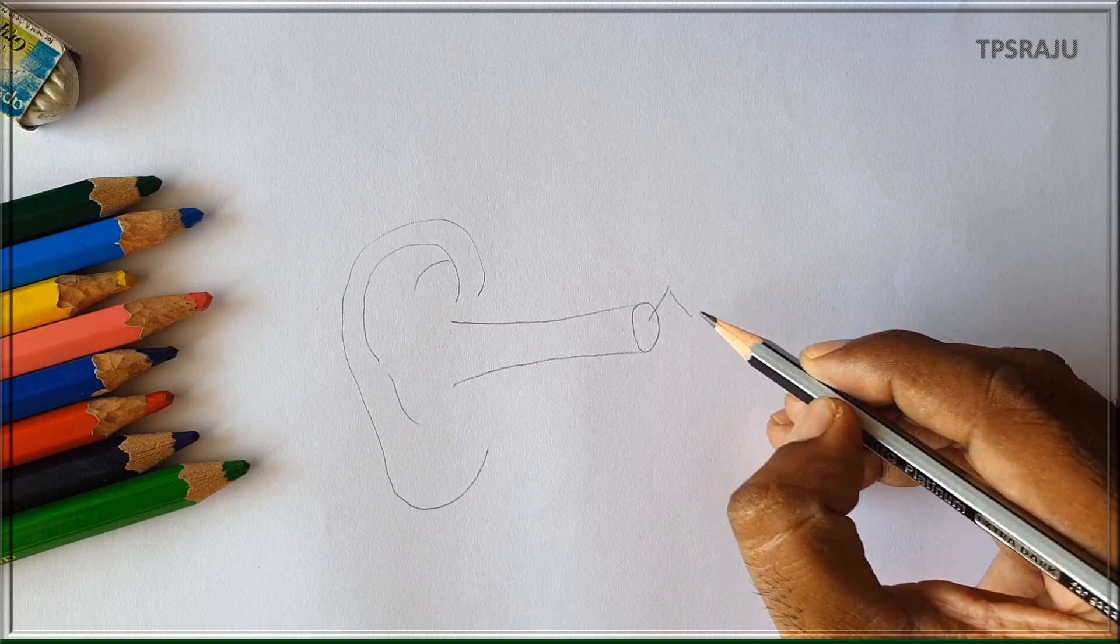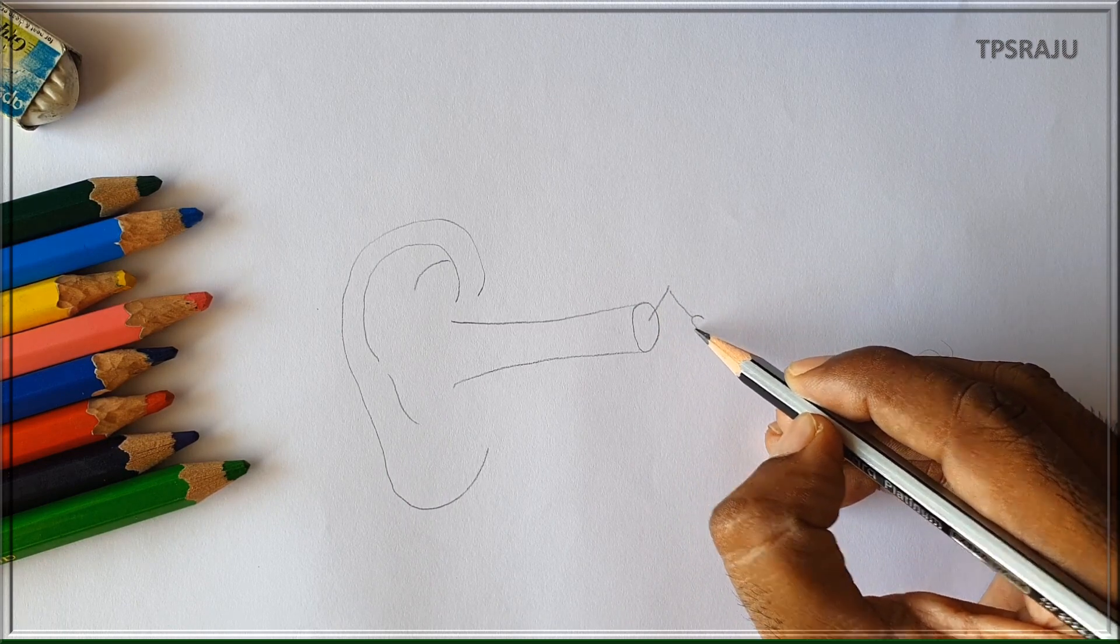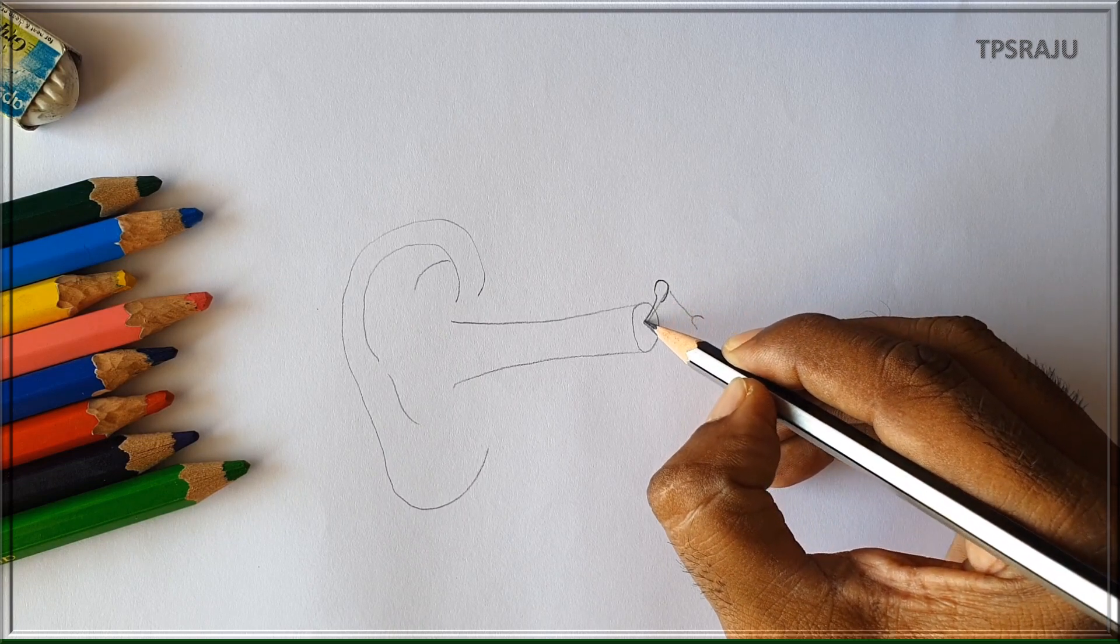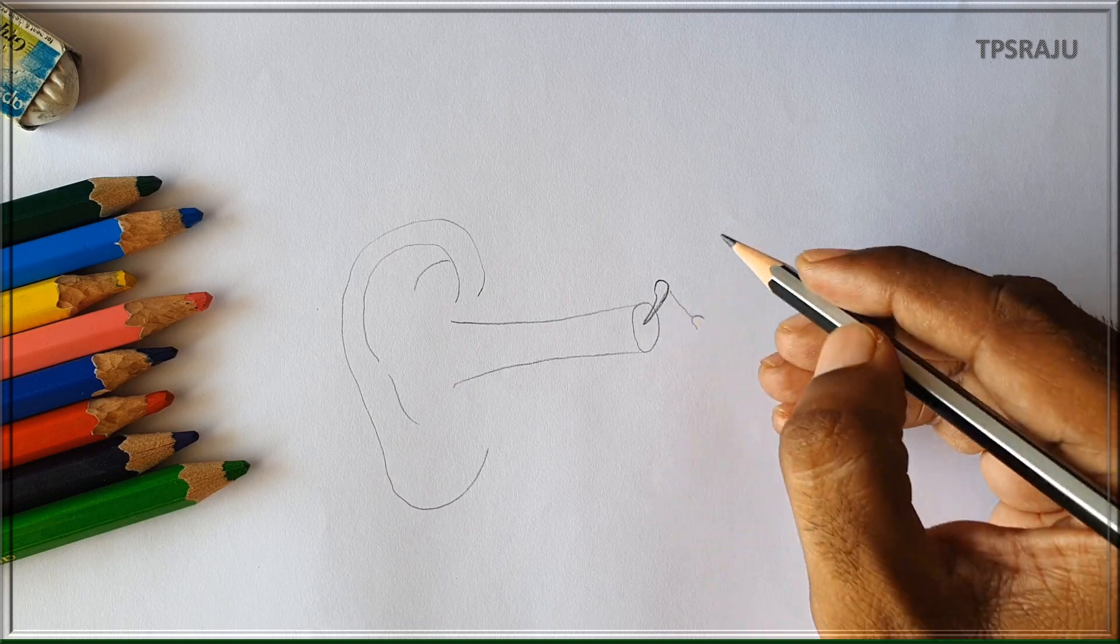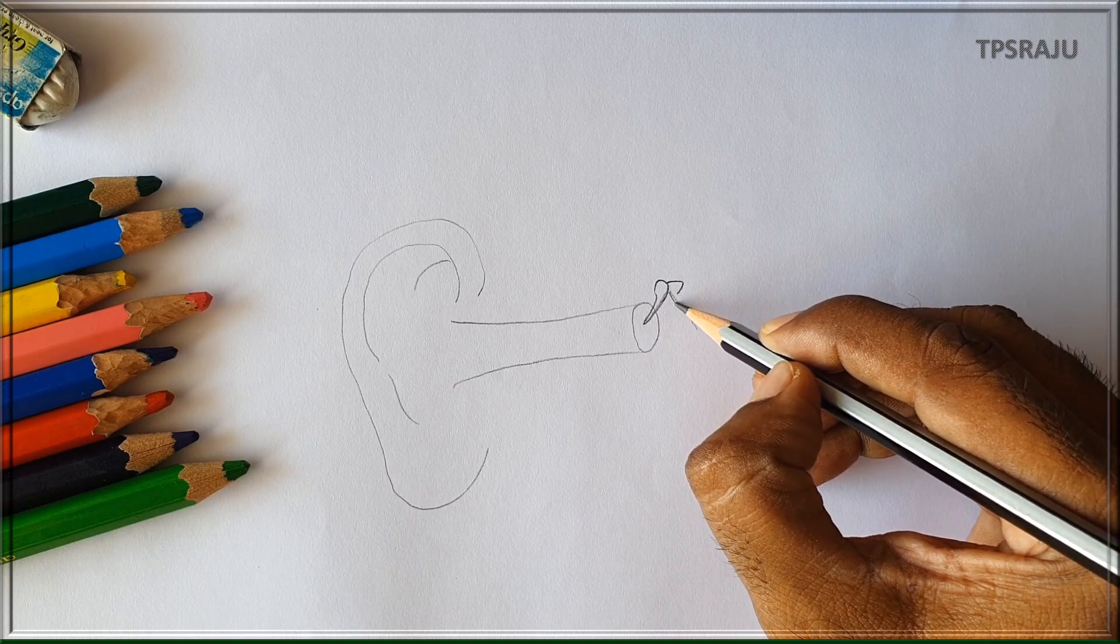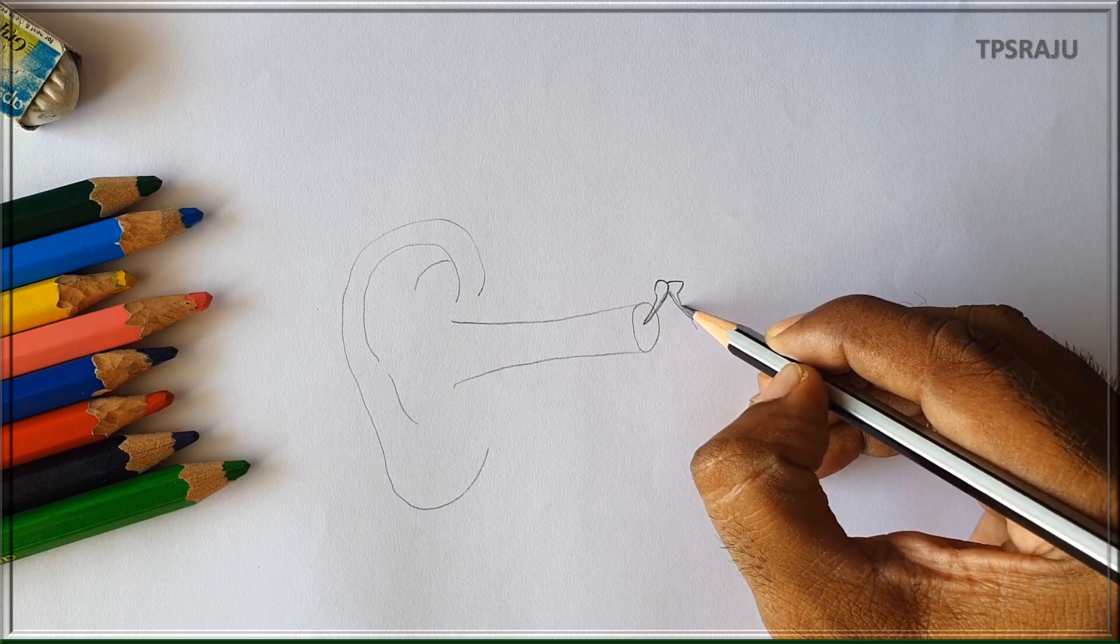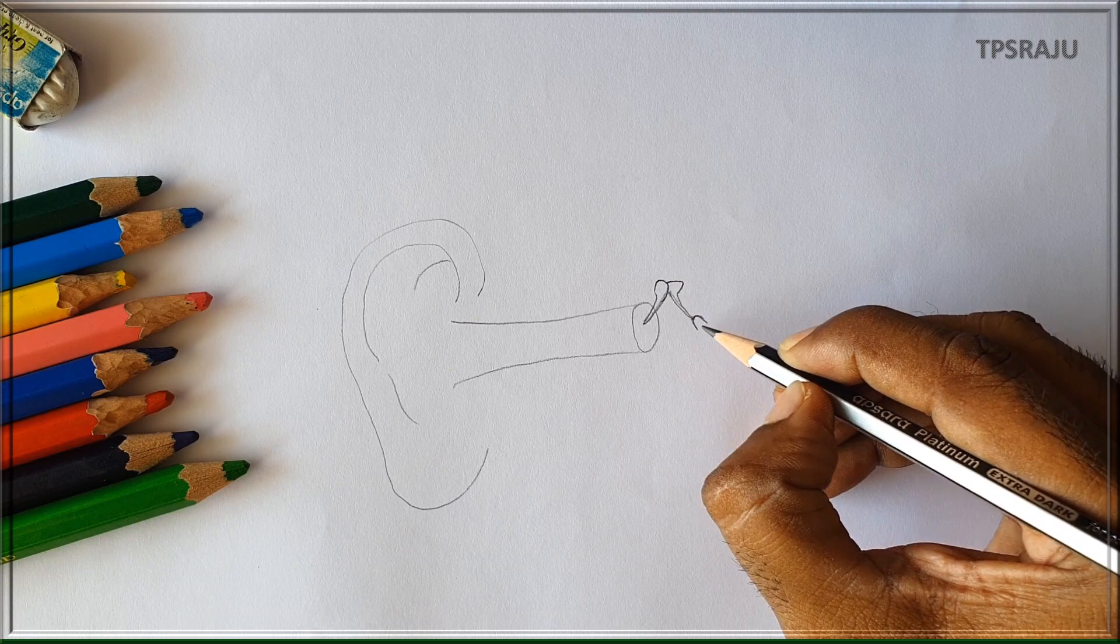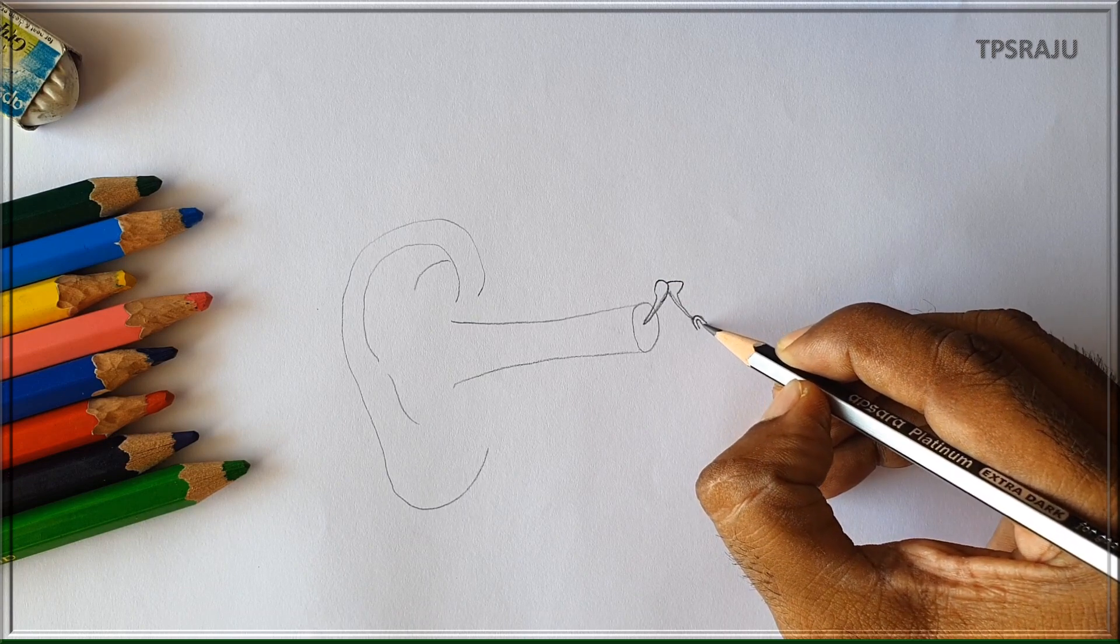Tympanum connected to a bony chain made up of three tiny bones called malleus, incus, and stapes. This is malleus. This is incus. This is stapes.